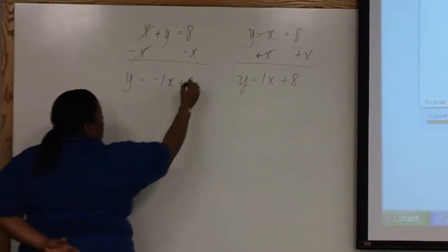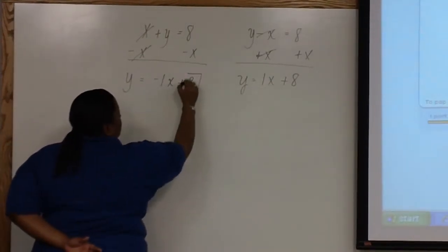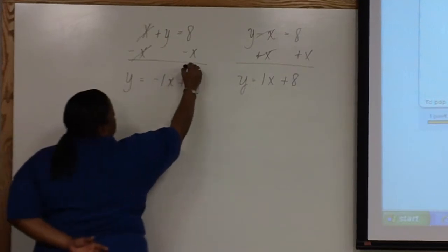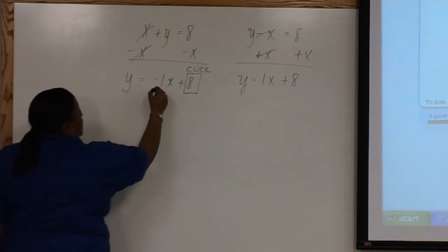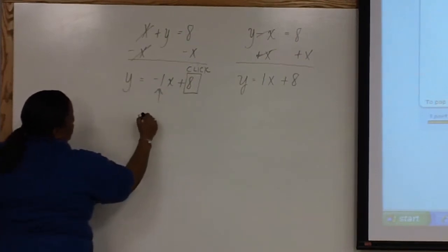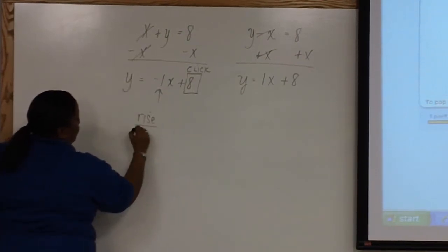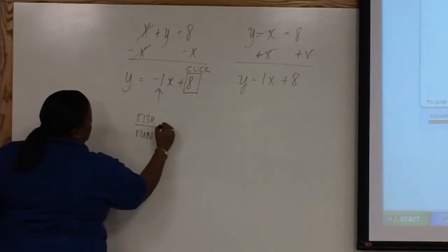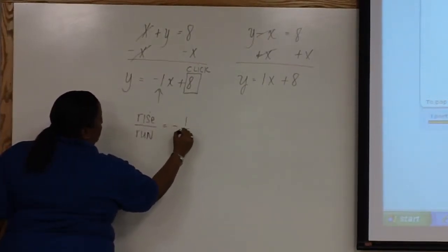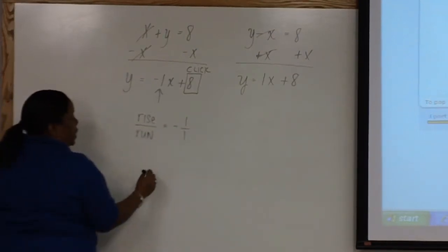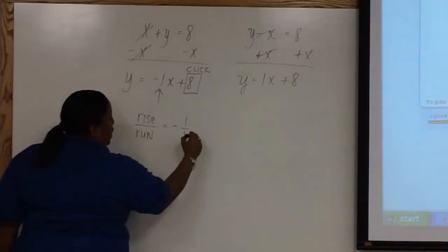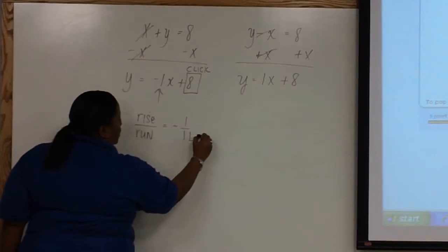In the first equation, notice that our y-intercept is positive 8. So this will be the first place we click on the y-axis. Our slope, which is also known as rise over run, is equal to negative 1, and we can write that over 1. Because the slope is negative, that means that when we get ready to run, we will run to the left.